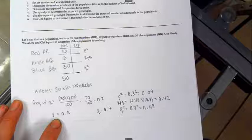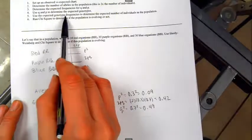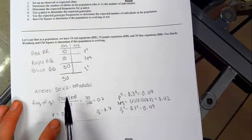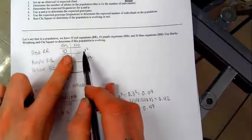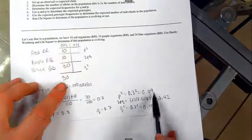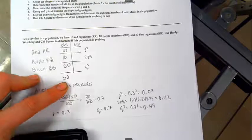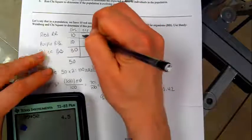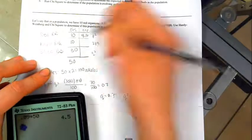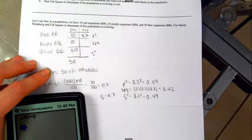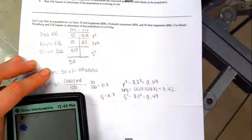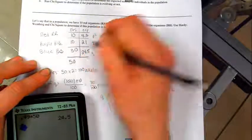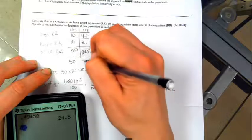These are the expected genotype frequencies. We need to use this to figure out the expected number of individuals. There are so many steps to this problem. So if RR, P squared, is 0.09, that's the frequency, 0.09 of 50. So I'm taking 0.09 times 50 is going to give us 4.5 individuals. My 2PQ, 0.42, times 50 individuals, gives me 21 organisms. And my 0.49 times 50 individuals gives me 24.5. Double check that those add up to 50, right? That's one way to check yourself. That should make sense.